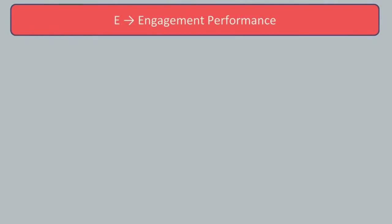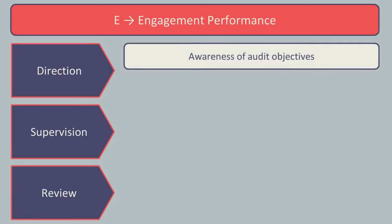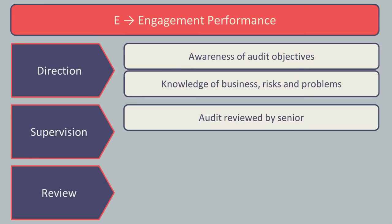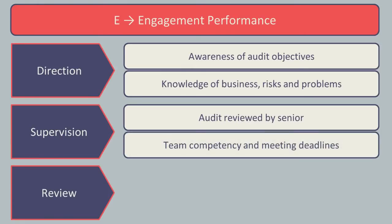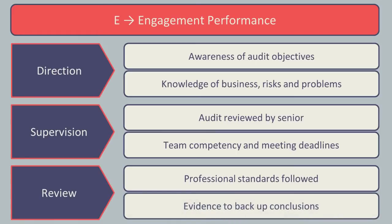Finally, E is for engagement performance. This looks at the overall performance of the audit assignments across the audit firm and is made up of three elements: direction, supervision, and review. The direction focuses on ensuring everyone is aware of the objectives of the audit, knowledge of the client business, the risks, and any problems that may arise. Supervision ensures the audit is reviewed by someone senior who can confirm the team is competent and deadlines are met to provide timely information for the client. The review ensures professional standards have been followed, that there is evidence to back up conclusions made, and that the evidence collected is sufficient and appropriate.